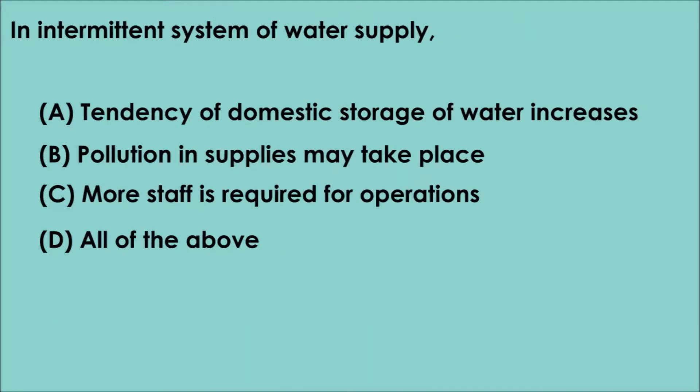Question 6. In intermittent system of water supply: A. Tendency of domestic storage of water increases. B. Pollution in supplies may take place. C. More staff is required for operations.